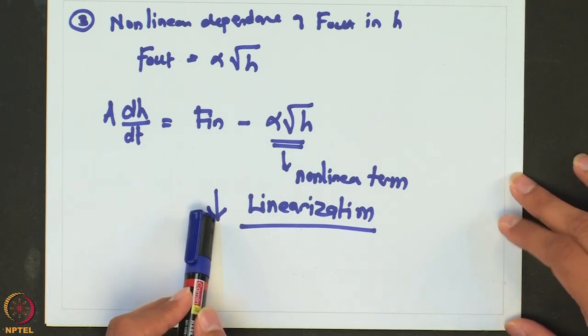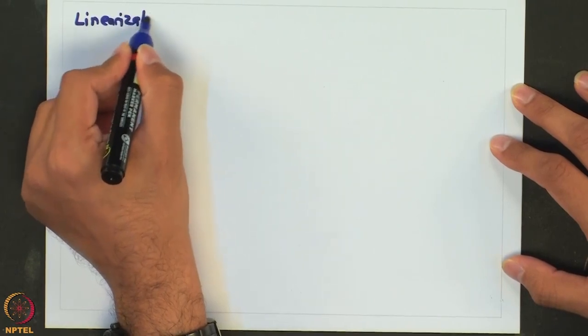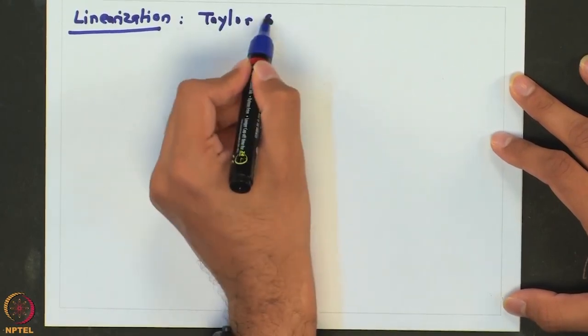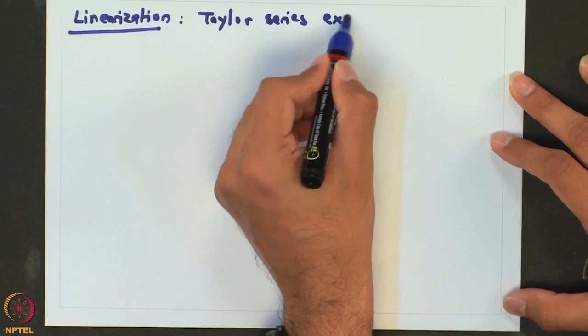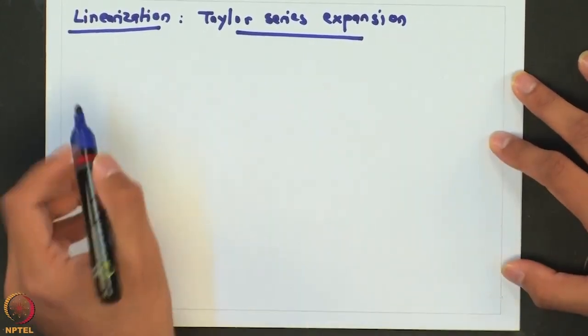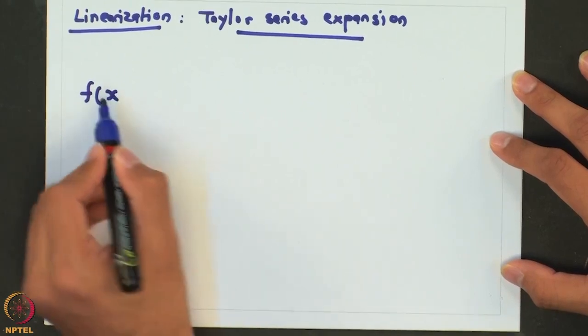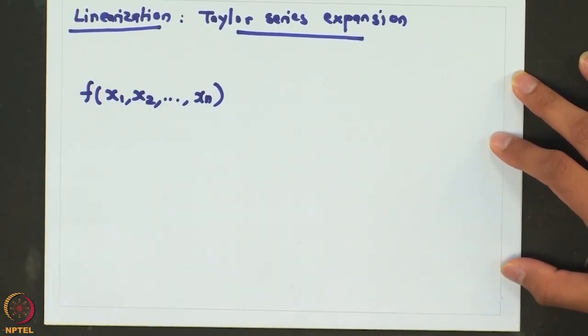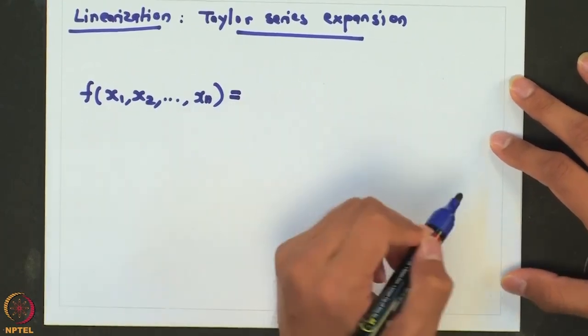So the first thing we have to do is linearize this system. Let us look at how we can linearize a non-linear function. The mathematical rule we are going to use to do this is Taylor series expansion. You might be aware of the Taylor series expansion — let me revisit it. If we have a function of variables x1, x2 to xn, we can approximate this function around the function value at any point.